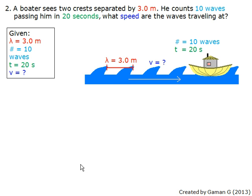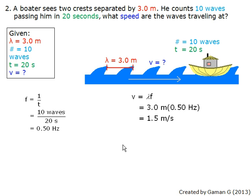Before we can use the wave equation, however, we must calculate the frequency as shown in this equation. Once completed, the frequency and wavelength are substituted into the wave equation, seen here, which is then solved, giving us an answer of 1.5 meters per second.